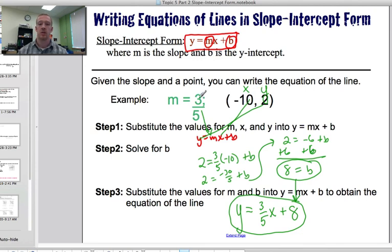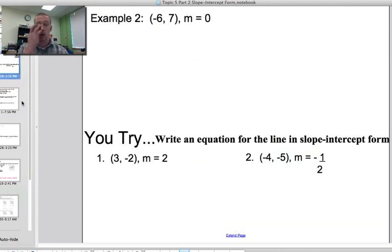All right? So it's just this idea of substituting the slope and the point coordinates, solve for b, and then substitute the slope and the y-intercept just like you did on the last video to get the equation. So here is another example.